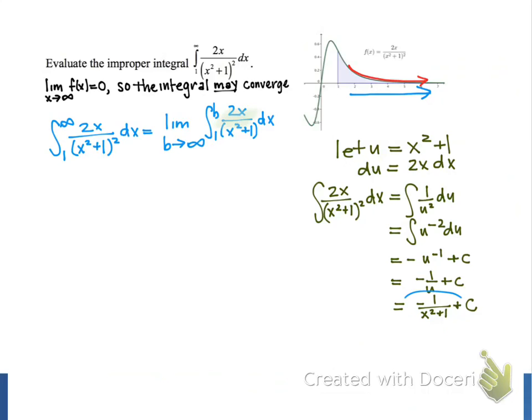We're going to use this result of integration to go back to evaluating our improper integral, which we can now write as the limit as b approaches infinity of negative 1 over x squared plus 1 from 1 to b.